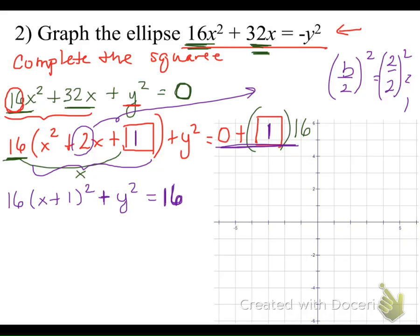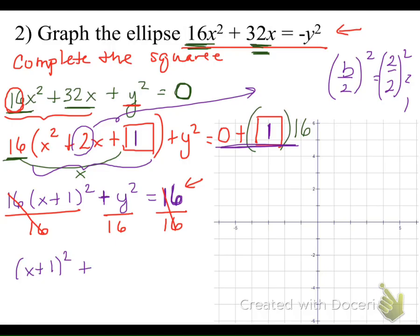We're almost there, but our equation is set equal to 16, not 1. To get it equal to 1, we divide all terms by 16. Our equation in standard form is (x + 1)²/1 + y²/16 = 1.